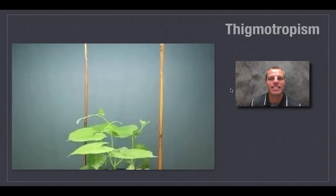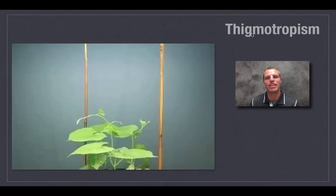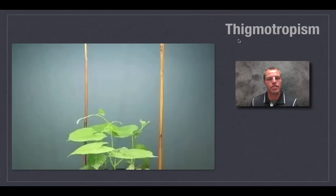The last tropism we're going to talk about is thigmotropism. 'Thigmo' comes from the Greek word 'thigma,' which means touch. Combined with 'trope,' it means to turn towards something that it's touching. Most plants have a positive thigmotropism, though negative thigmotropism is also possible.